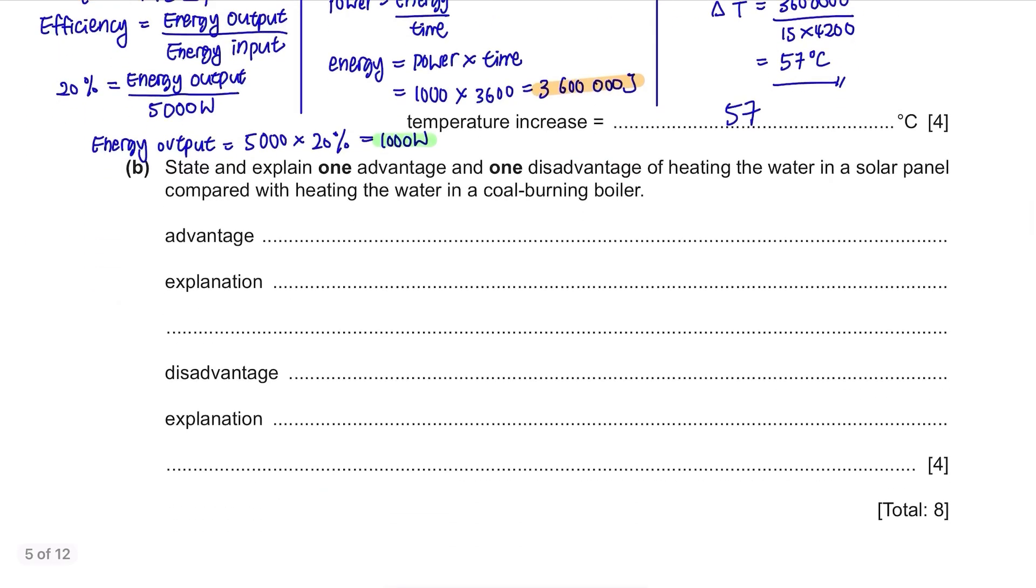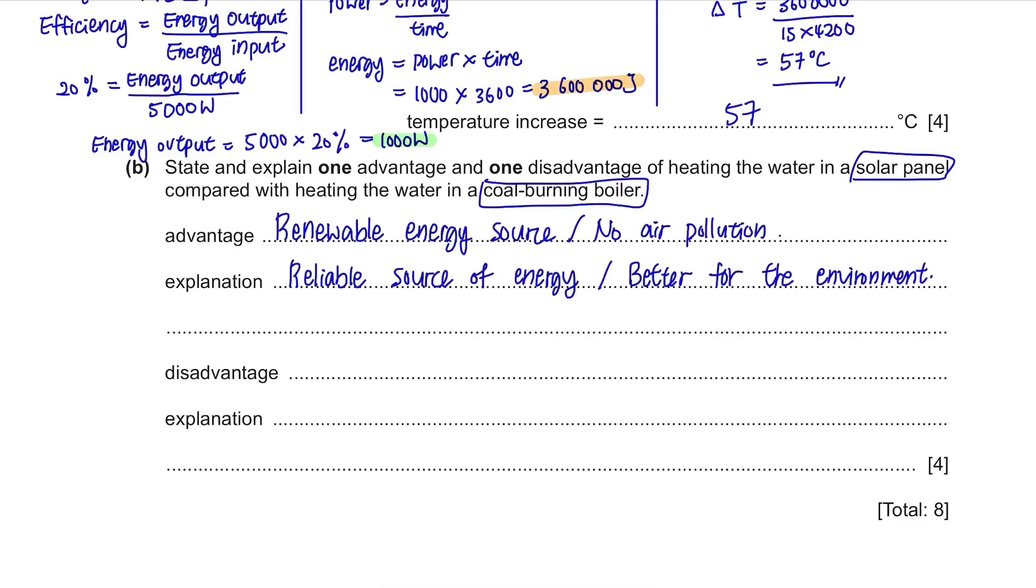Part B. State and explain one advantage and one disadvantage of heating the water in a solar panel compared with heating the water in a coal burning boiler. The advantage is that it's good for the environment since the energy from the sun is renewable and no air pollution is caused compared to when using a coal burning boiler. The disadvantage is that it's quite expensive to install one and you need a proper roof for that. Also, it won't be available at night so it can be inconvenient.